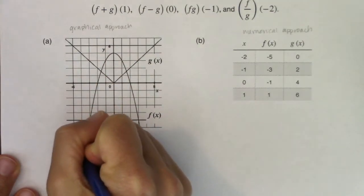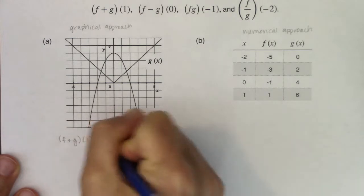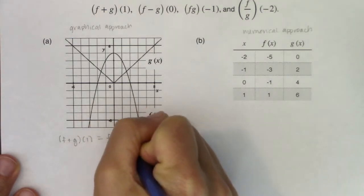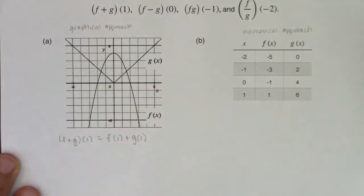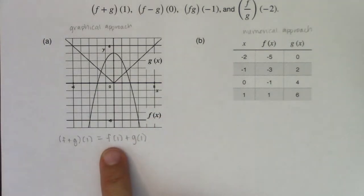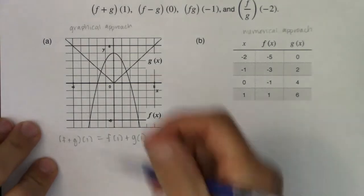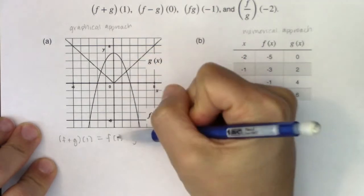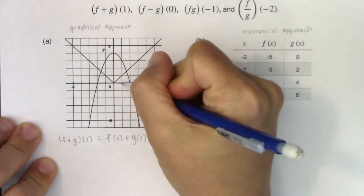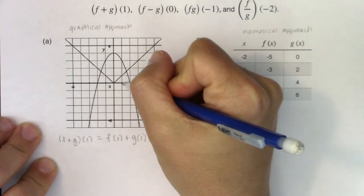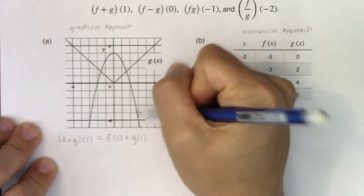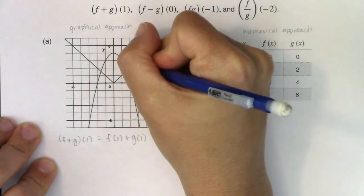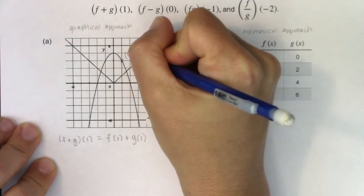Let's start with f plus g evaluated at one. From the previous page we know that is f of one plus g of one. I don't have a function to plug into, which is distinctly different from example one, but I can go get all of these y values from my graph. The upside-down parabola is f of x and the absolute value function is g of x. So let's find f of one — I go right by one unit and hop onto the parabola. I see f of one is three.